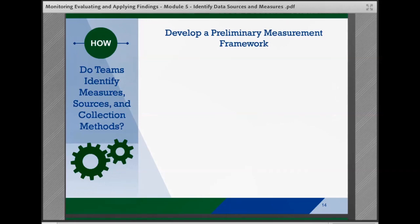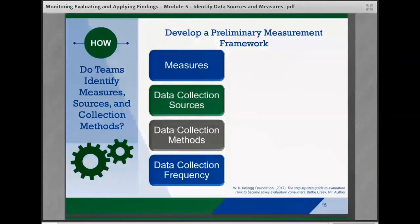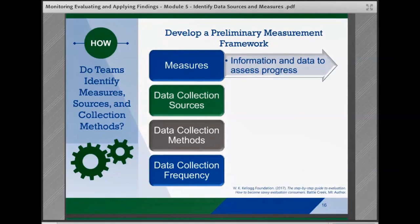How do teams identify measures, data sources, and potential data collection methods? Teams should identify the data they need to answer the selected questions and understand their intervention's functioning, progress towards goals, and effects on desired changes. A measurement framework is a useful tool to help teams transition from the logic model to an evaluation plan. Teams should review their identified questions and consider the following elements when creating the framework. Teams should detail the measures, including both qualitative and quantitative information and data, that can be used to assess whether progress was made toward the desired change. These may include process, fidelity, and outcome measures, and they should reflect how the intervention is functioning.